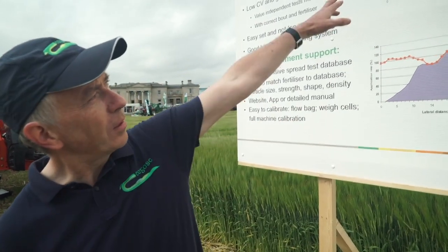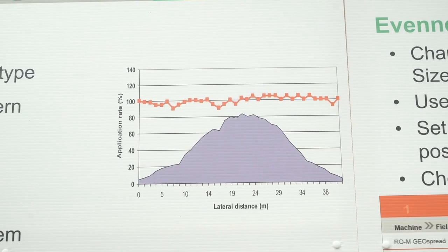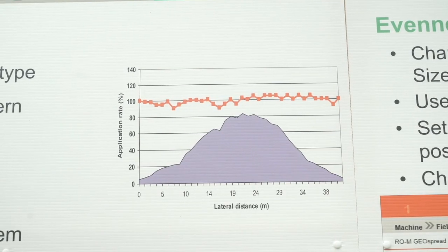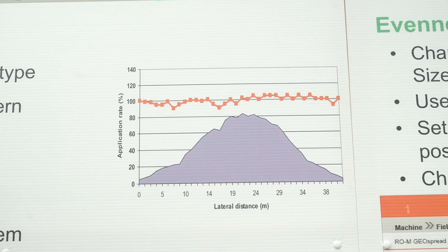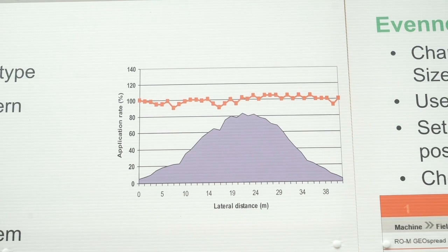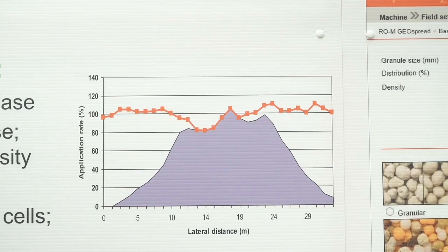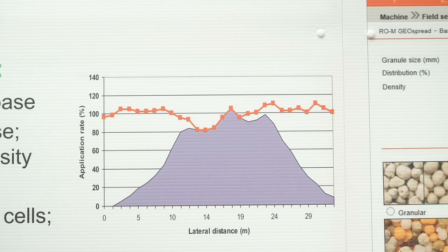The actual spread pattern that we get when we spread the fertilizer is hugely important. On the top graph here you can see quite a good spread pattern. It's basically triangular in shape and the red line at the top shows a pretty even line across the full width, so when it's overlapped that's what it will look like. On the other hand, if we look at the bottom graph here, this is what we'd call a shoulder pattern. It's not really triangular — it has two shoulders at each side. This is not a good pattern for matching.